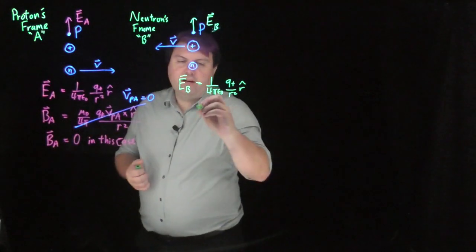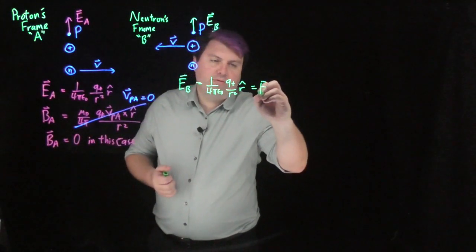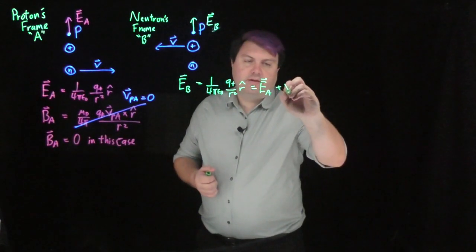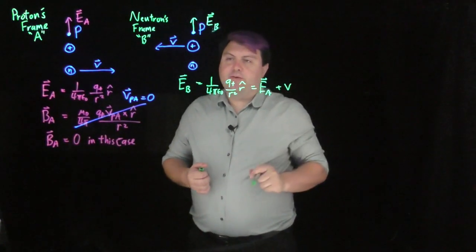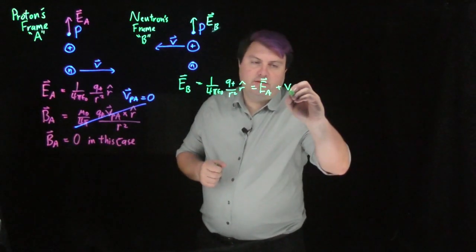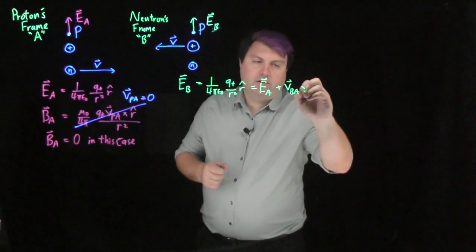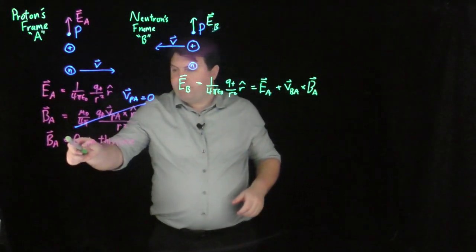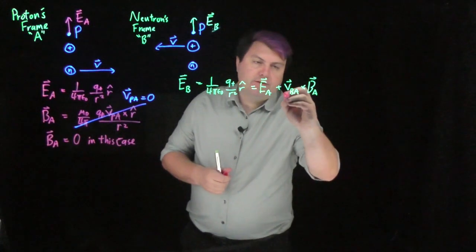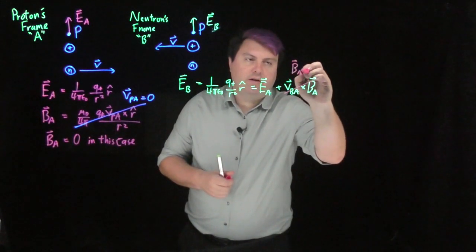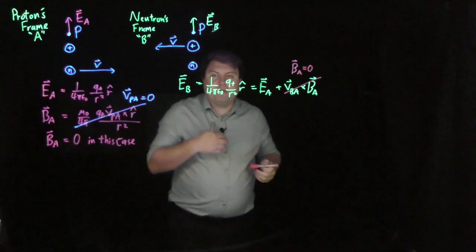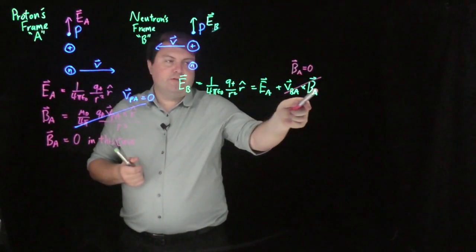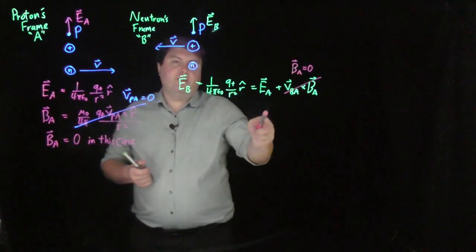which is good because this is equal to the electric field from A plus velocity of frame B in reference to frame A crossed with the magnetic field from A. Well, we know the magnetic field from A is zero. So this is zero because B_A is equal to zero. So we've confirmed our electric field from two different calculations.